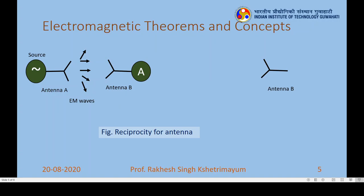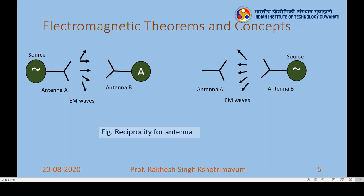In the second experimental setup, we have antenna B as the passive device — we give it EMF, microwave or RF source, and it starts radiating fields everywhere as EM waves. Somewhere in space we have antenna A, on which the field is incident, inducing a current that we measure with an ammeter. The current measured in the first setup and the second setup will be equal. This is what the reciprocity theorem tells us about antennas.